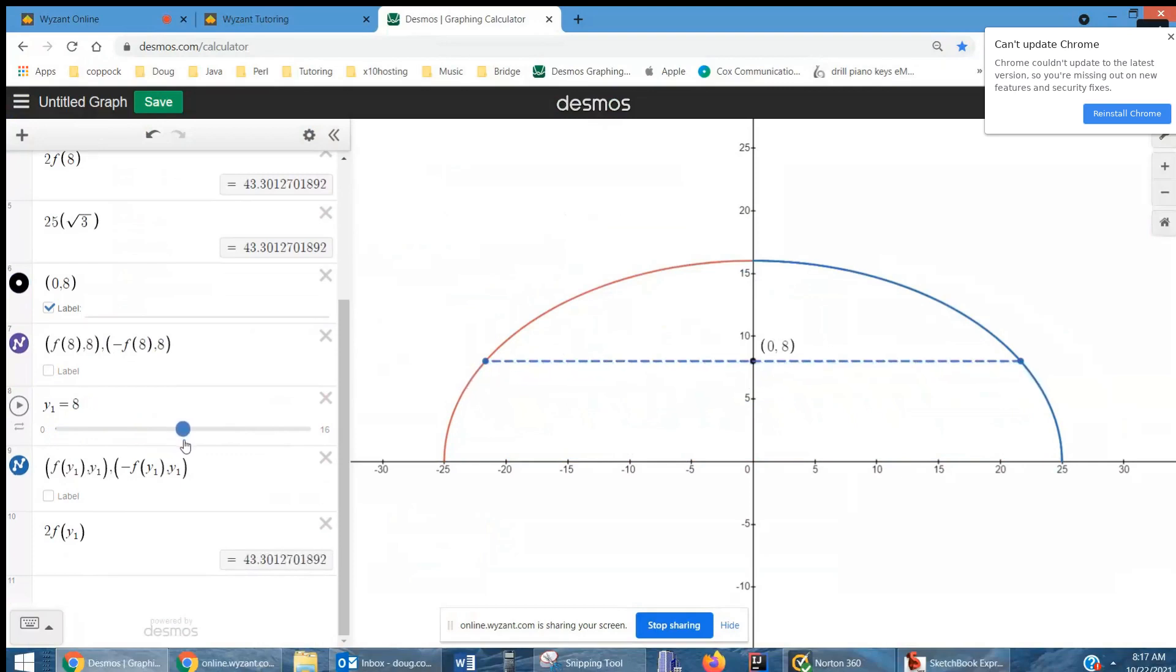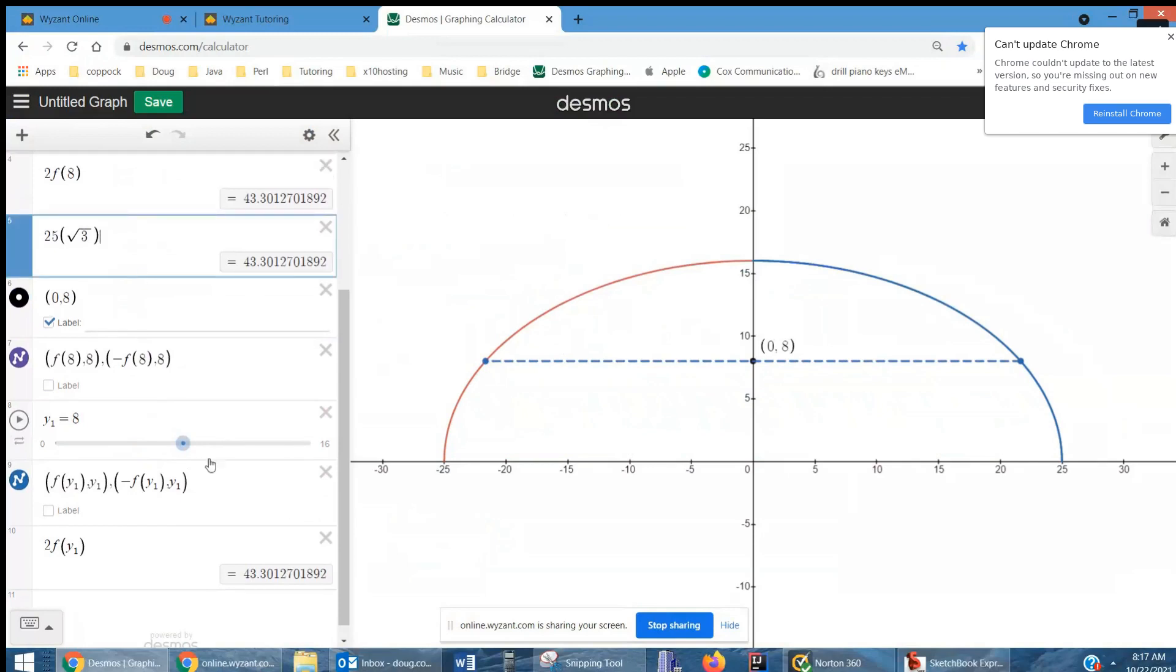When I get to 8, I get this 43.031. But that is the same as this 25 radical 3. Of course, by the time we get up to 16, the length or the width of the base is 0, or the width of the arch at the top is 0.